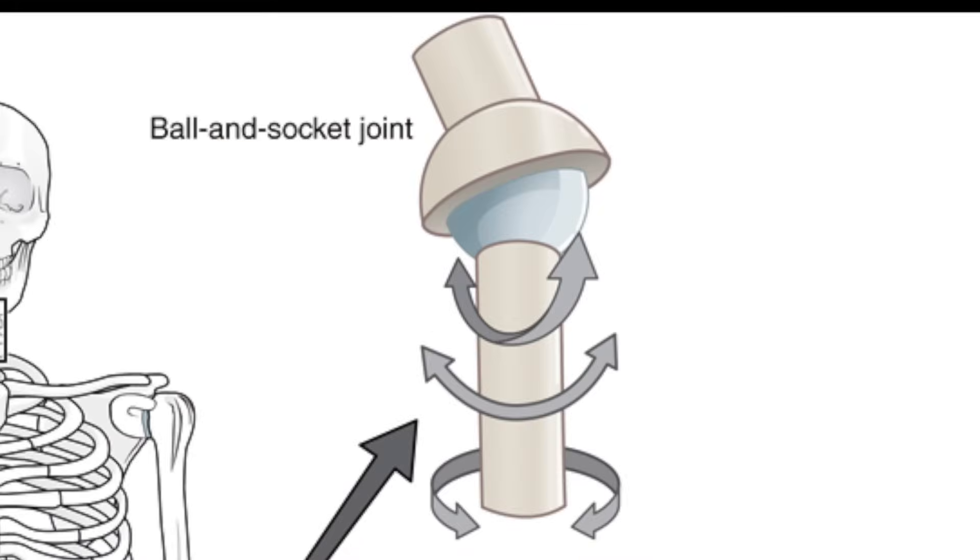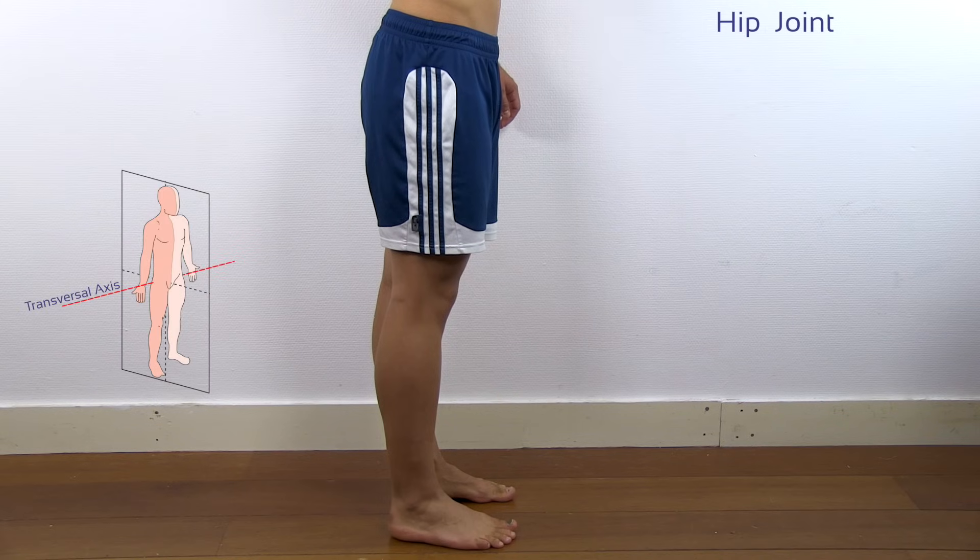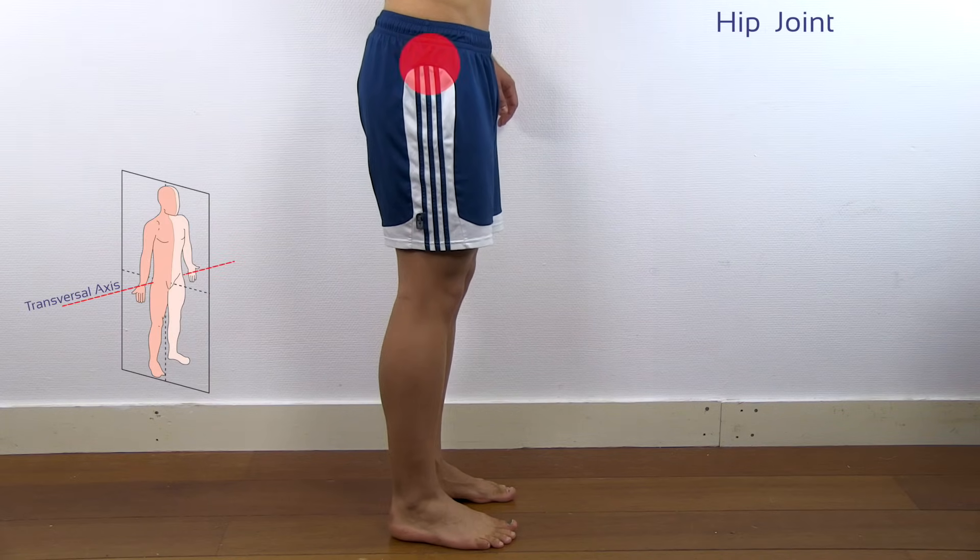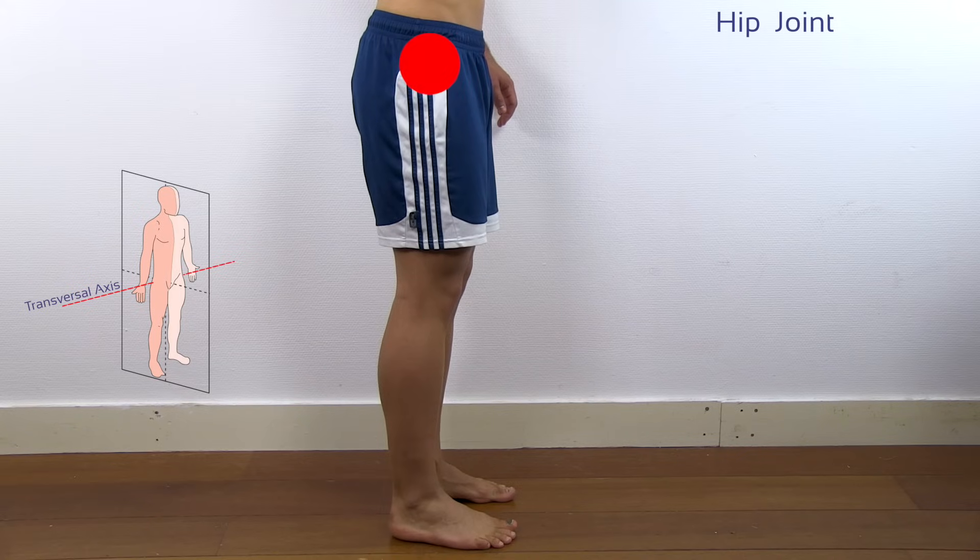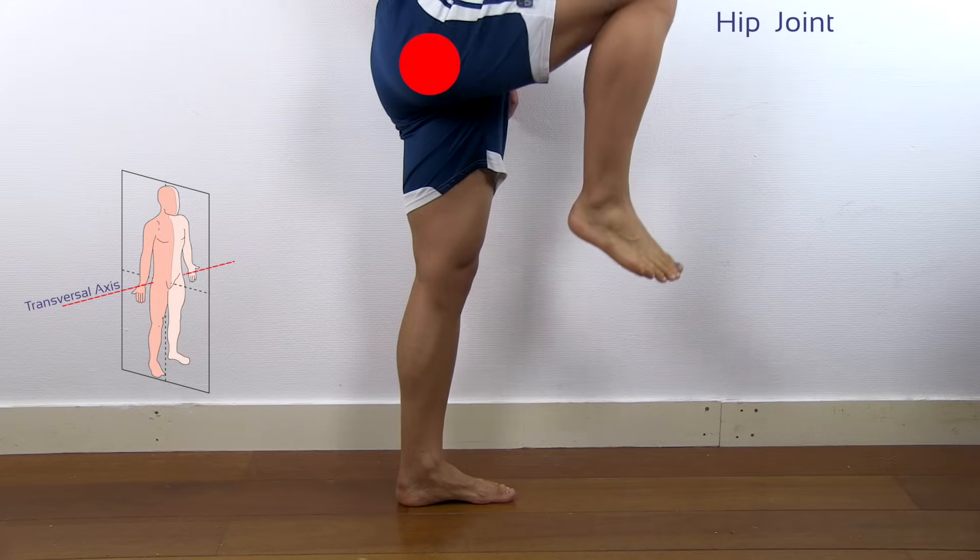The hip joint is a ball and socket joint and therefore has 3 degrees of freedom as well. If we are moving the hip in a sagittal plane, we are moving around the transversal axis. These movements are called flexion and extension.